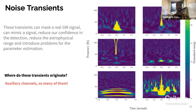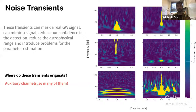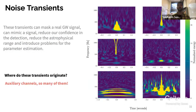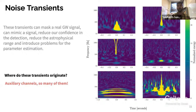Our friend Q-transform is back — I'm using it to show how noise transients look in the time-frequency plane. We have different types of transients based on how they look in this plane; the Omicron plot alone doesn't tell us much about morphology, but Q-transform can. Why are these transients bad? They can mask a real gravitational wave signal — if you have a gravitational wave and a glitch at the same time, you might not be able to see the wave properly because these transients are usually louder than the gravitational waves.